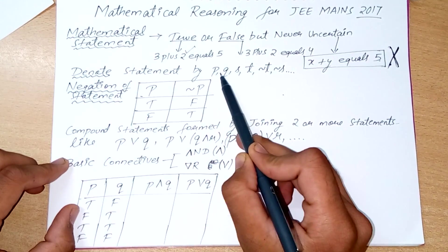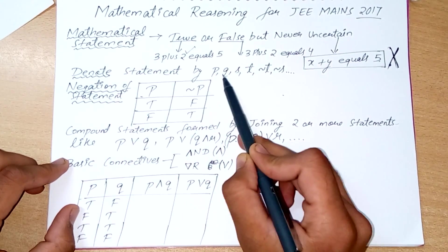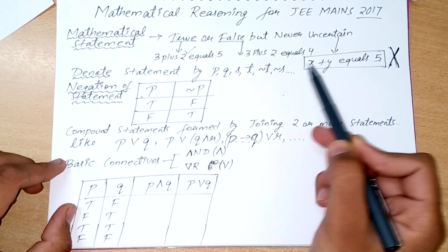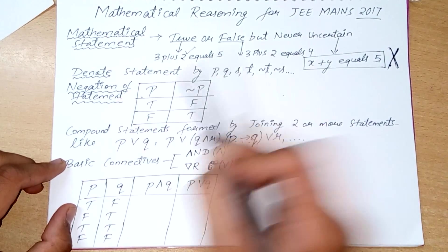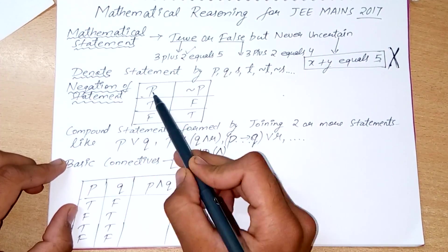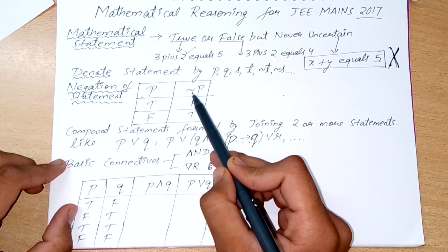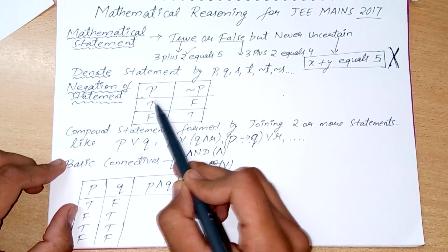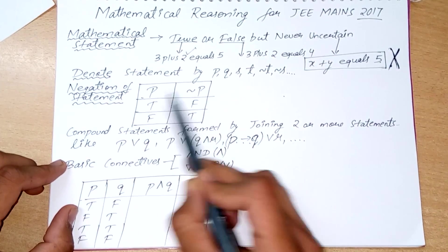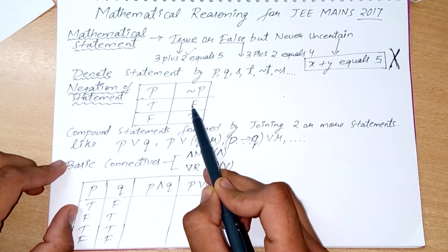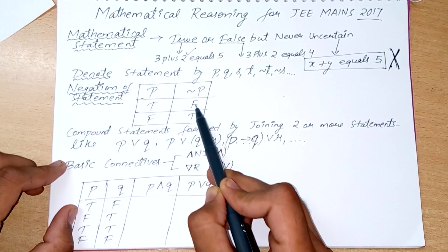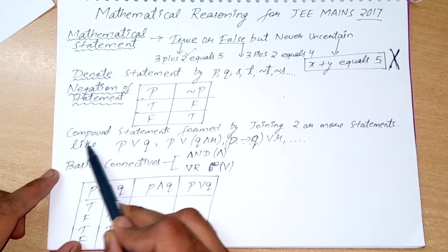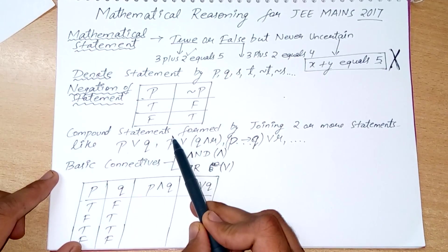We denote a mathematical statement by letters like P, Q, S, T. Negation of a statement: if P is a statement, then negation of P is just the opposite of that. True makes negation of P as false, and false becomes true.